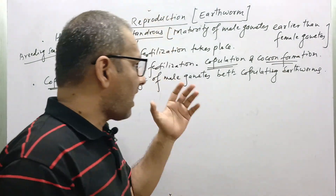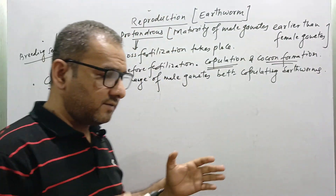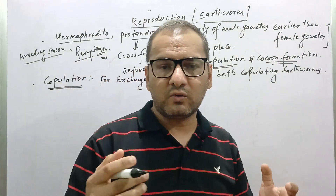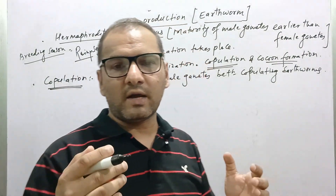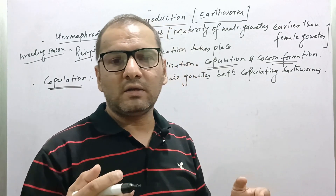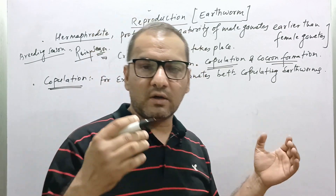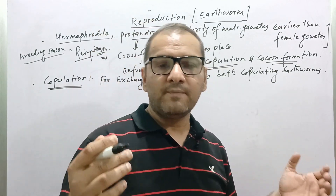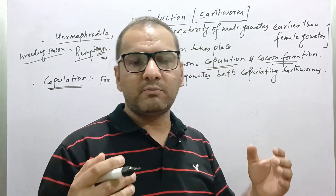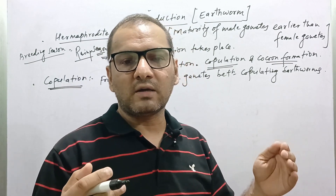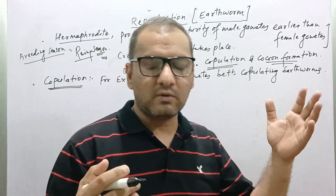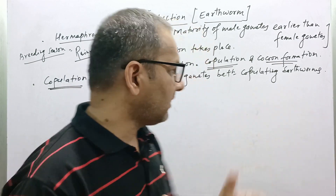During copulation, two earthworms come in contact of each other by their ventral surface, facing anterior end towards the opposite direction, such that the male genital pore of one earthworm remains in contact of the spermathecal opening of the another earthworm. Let's make a diagram.